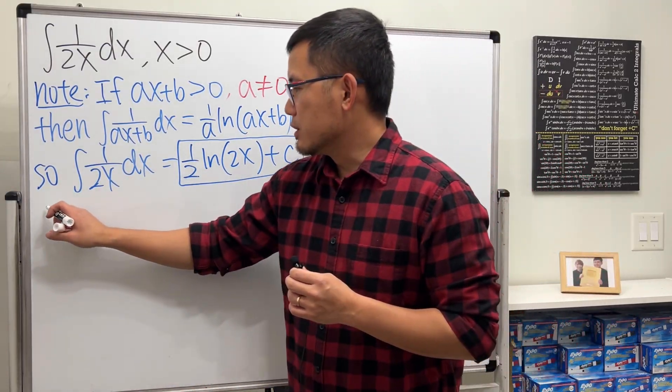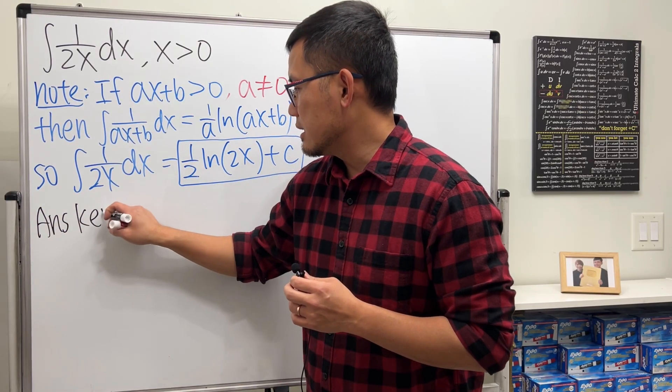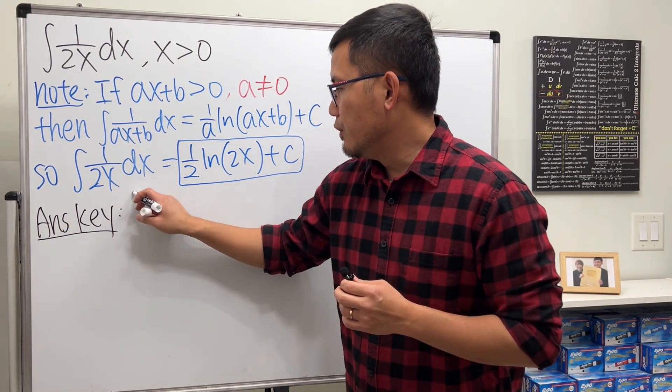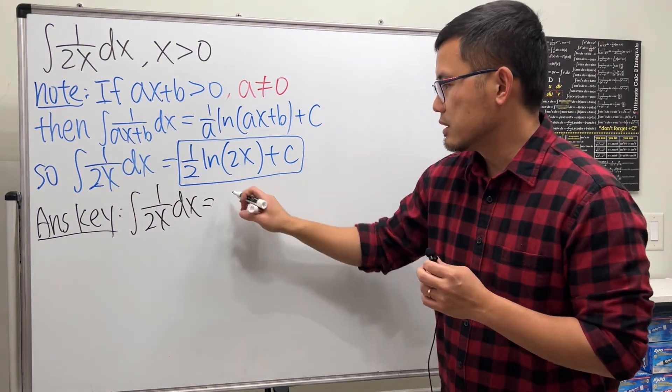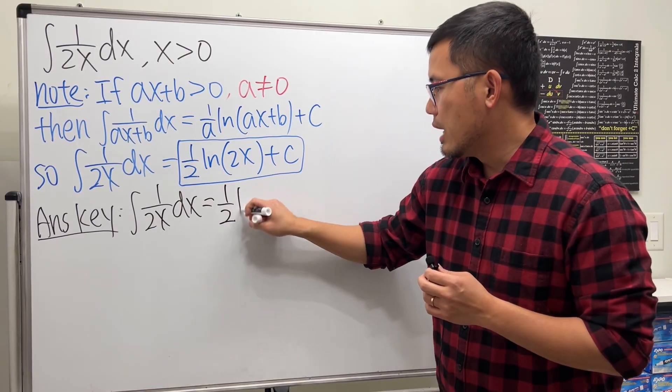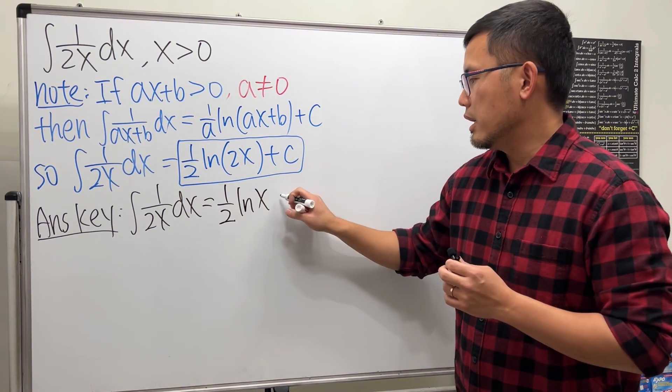However, you know, if you check the answer key, maybe just in the back of the book, the answer key says that if you have the integral of 1/(2x)dx, this right here is really just 1/2 ln(x), just x inside of the ln, and then plus C.